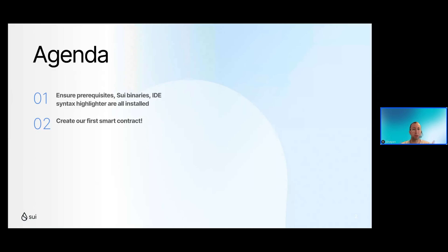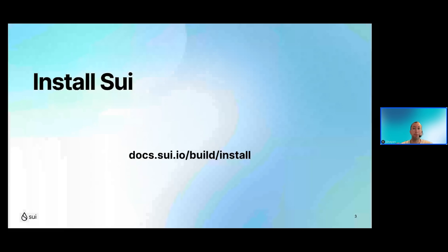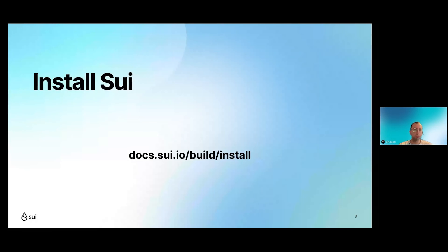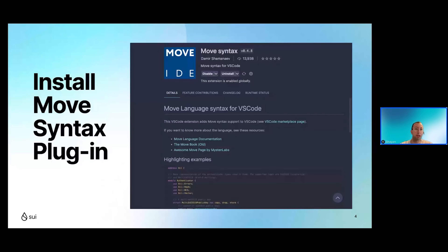Once everything is installed, we will create our first smart contract. If you haven't installed Sui already, navigate to docs.sui.io/build/install to follow the steps for your particular OS, install any prerequisites, and eventually install the Sui binaries. The IDE you'll be using is VS Code, and the best Move syntax highlighter is called 'Move Syntax' made by Damir, an engineer at Mysten Labs.